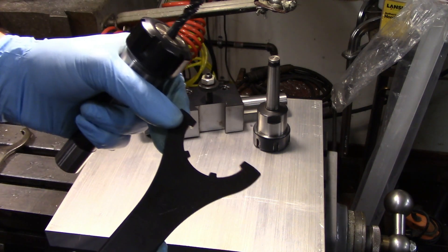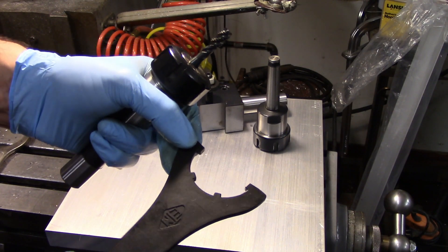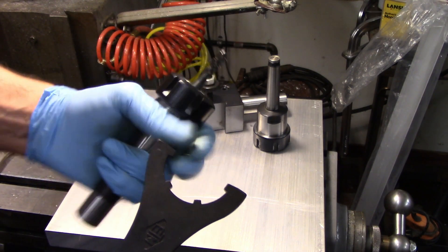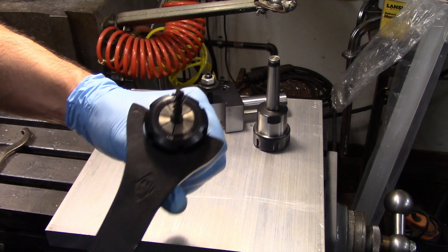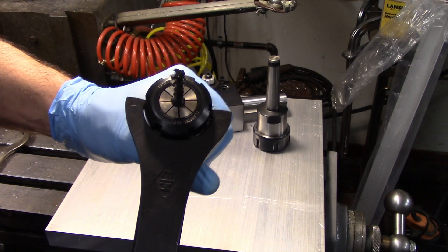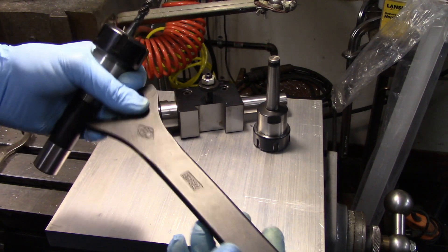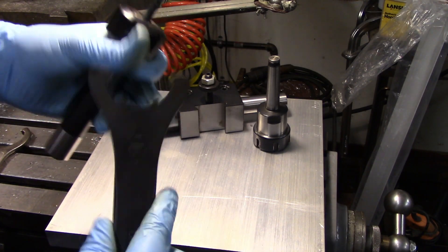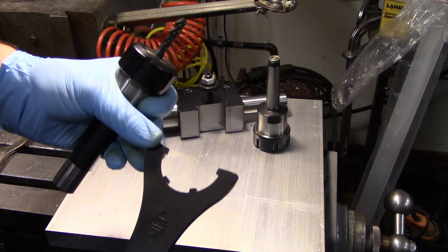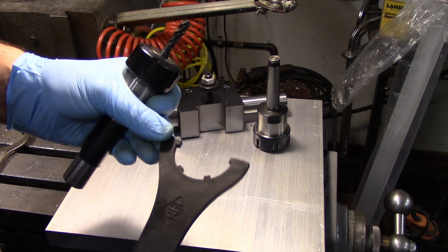You can buy an ER collet wrench like this and this has got four lugs that fit into the slots. They are unique to the size of clamping nut, so this is specifically for ER32. If you had a different size, you just have to get a different wrench. They're easy to find and not terribly expensive.